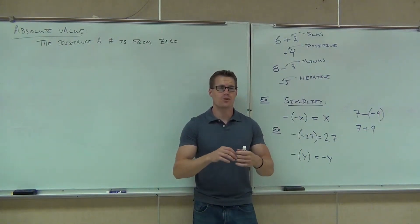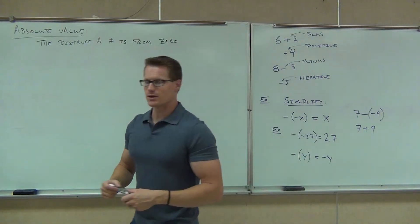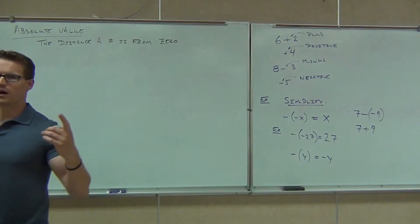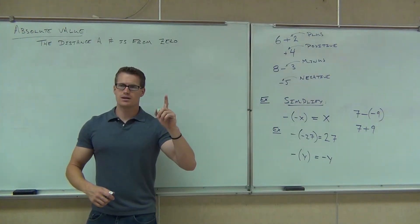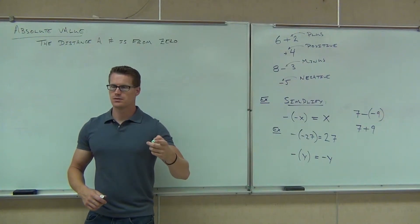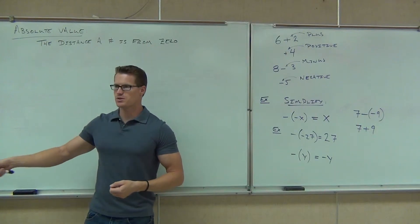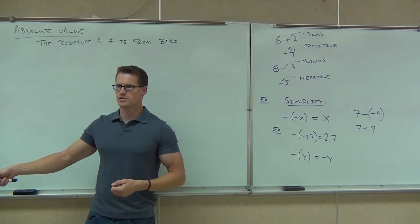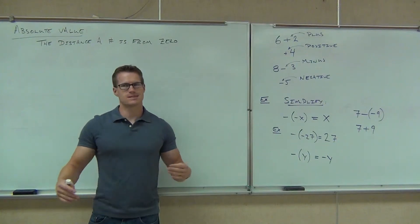It measures how far a digit is away from zero. So what that means for us is a couple things. Number one, I hope you're listening to that analogy, because that's a really good analogy for absolute value. Number one, is absolute value ever going to be negative? No. If I measure one way, I measure completely the opposite way, am I still going to get a positive? Absolutely. That means absolute value, since it's a measurement, it's not going to be negative ever.